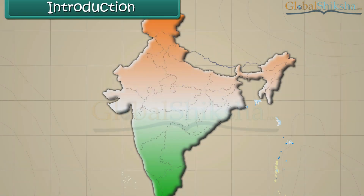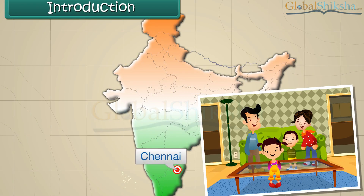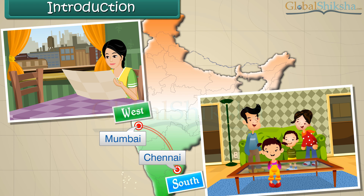Aditi lives with her parents in Chennai. Her aunt lives in Mumbai. She visits her aunt every year in April. So she travels from south to west.